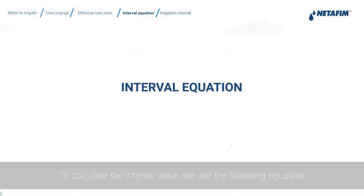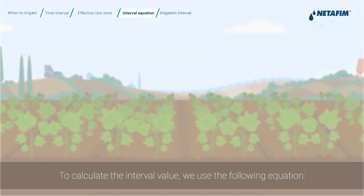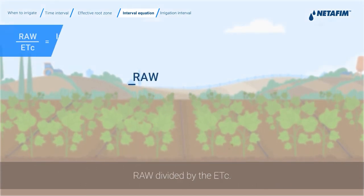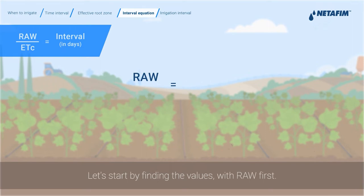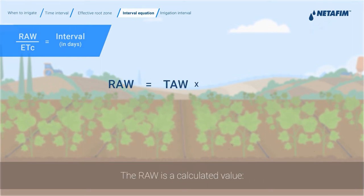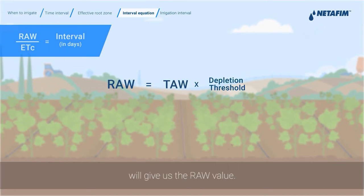To calculate the interval value, we use the following equation: RAW divided by ETC. Let's start by finding the values, with RAW first. The RAW is a calculated value — multiplying the TAW by the depletion threshold will give us the RAW value.